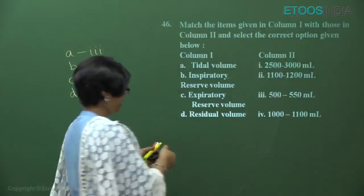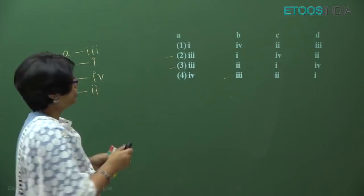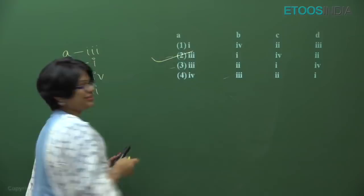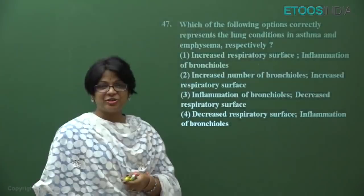For the match-the-column, A should be three, B is one, C is four, and D is two. Using our shortcut — A is three, so we choose between the options that have A matched with three. Then checking B is one — that confirms the answer is option two.